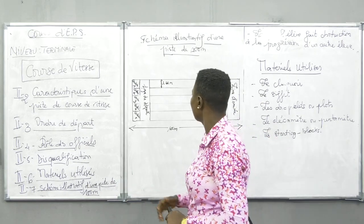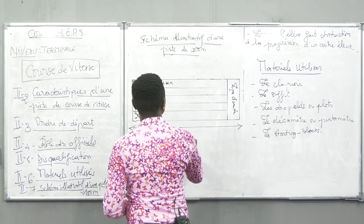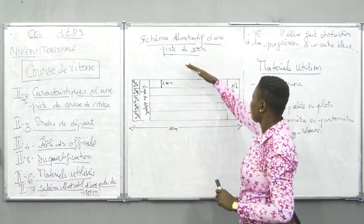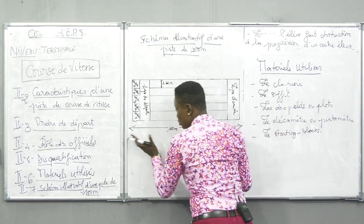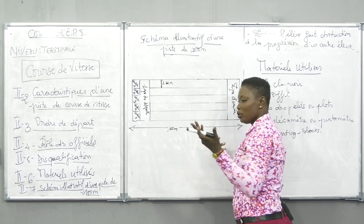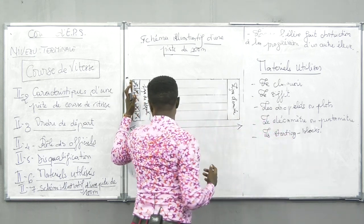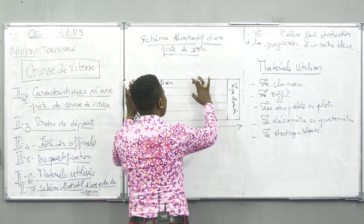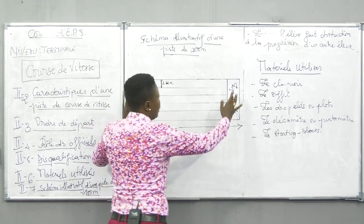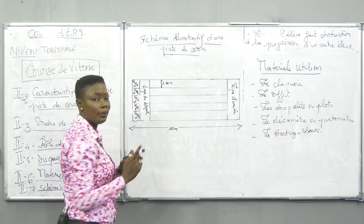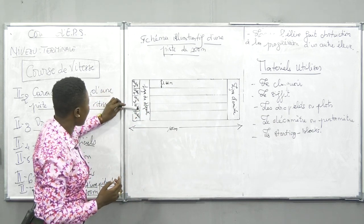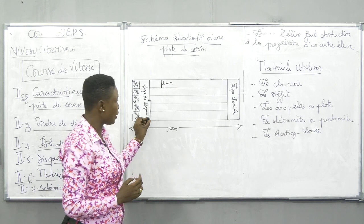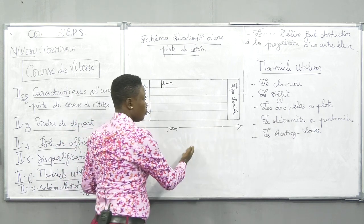Au niveau du schéma illustratif d'une piste de 100 mètres, j'ai schématisé un dessin au tableau qui montre à peu près ce que veut dire une piste de 100 mètres. Nous avons ici 5 couloirs, la ligne de départ, les couloirs propres, et chaque couloir mesure 1m22. Et enfin, la ligne d'arrivée. Les élèves se placent avant, et quand on les appelle, ils se rapprochent de la ligne de départ pour prendre leur départ.